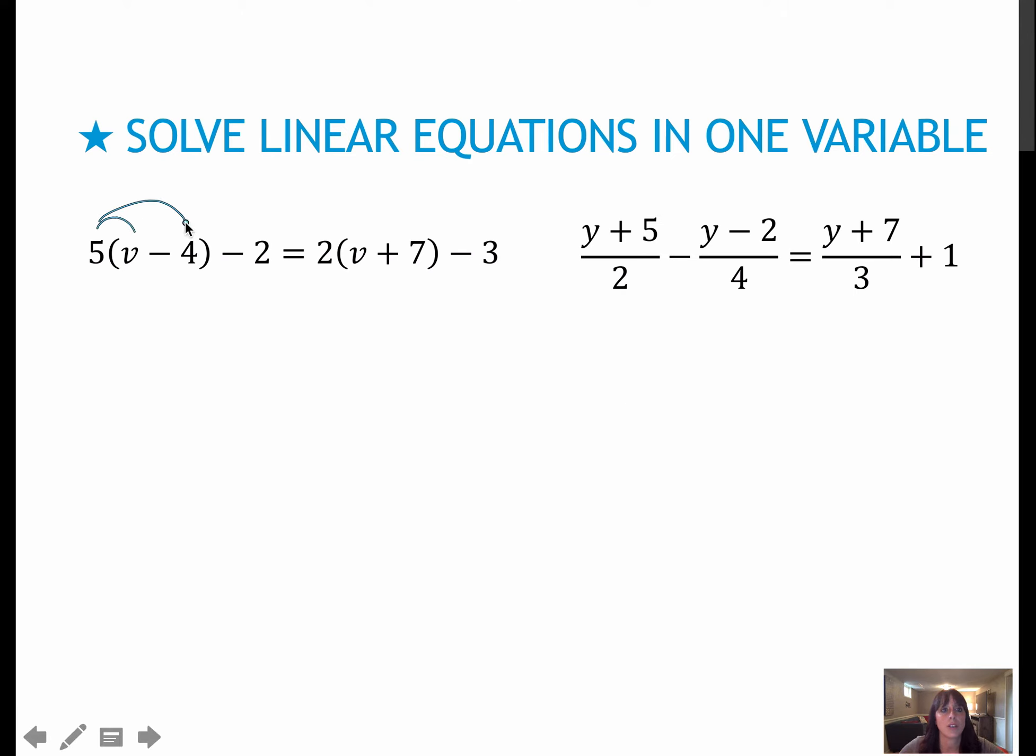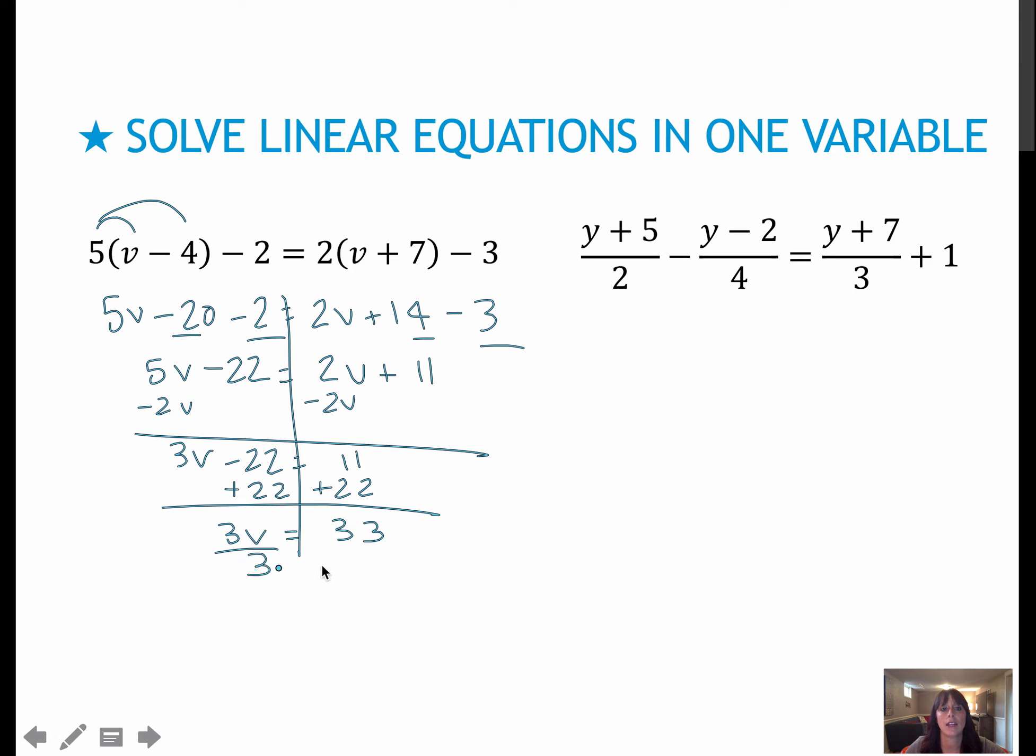For the first, again, I'm going to distribute. So 5 times v and 5 times 4. Over here, distributing gives me 2v plus 14 minus 3. I'm going to combine like terms on each side, so these two terms combine. And on the right side, these two terms combine. Get all of my variables to one side. Get all of my constants to the opposite side. And then divide by the coefficient, which gives me v equals 11.